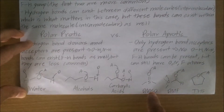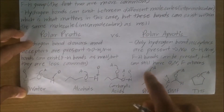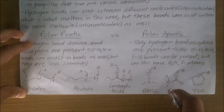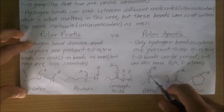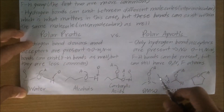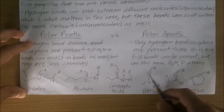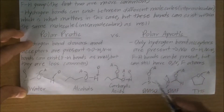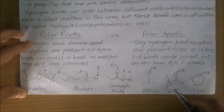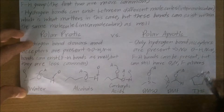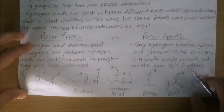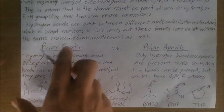For example, let's look at DMSO. In this sulfonyl group, the oxygen atom is covalently bonded to sulfur, and oxygen is still a hydrogen bond acceptor. And here in DMF, the N and O atoms are still acceptors, and in THF, our oxygen atom is also a hydrogen bond acceptor.